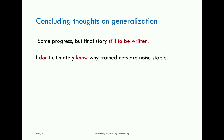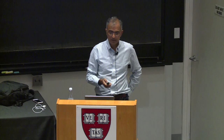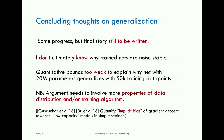Concluding thoughts on generalization: there is progress, but the final story is still to be written. Current estimates are better than past ones but still far too weak to explain why 20 million parameters don't overfit with 50,000 examples. A promising trend is studying the implicit bias of gradient descent — it finds low-capacity models in some simple settings.